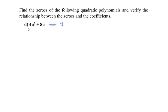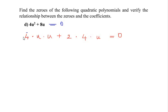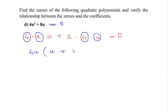Let us start factorizing: 4u² can be written as 4 times u times u, and 8 can be split up as 2 times 4 times u. This equals zero. Now let us circle out the common numbers or common terms from these two — 4 is a common number and u is a common term between these two terms. I am taking those as a common factor, and in the bracket I write the leftover terms.